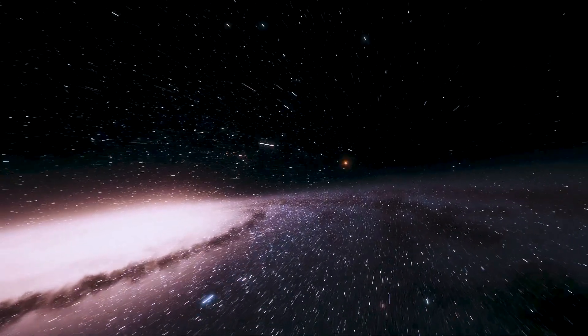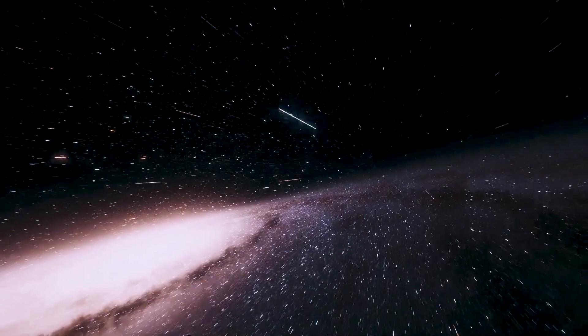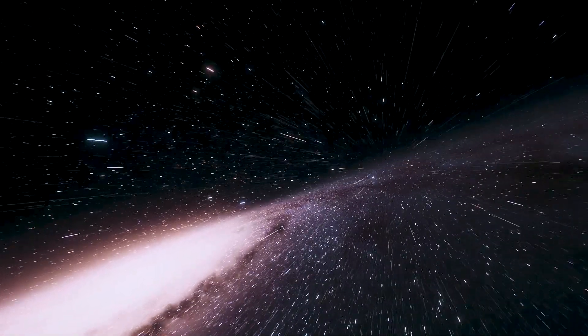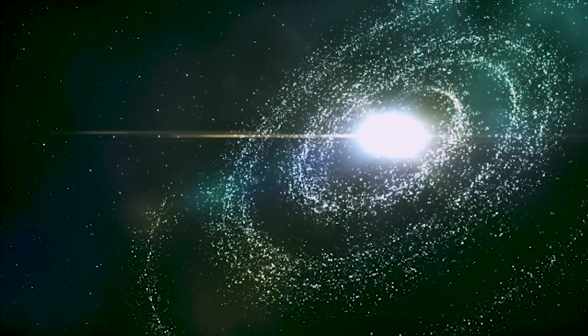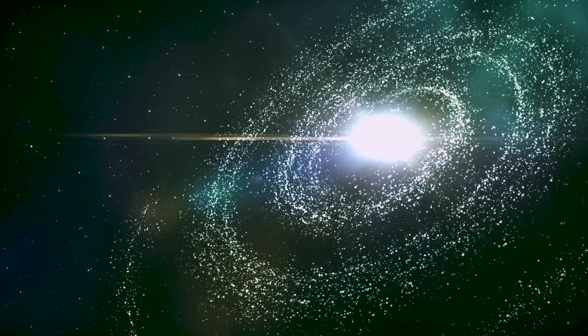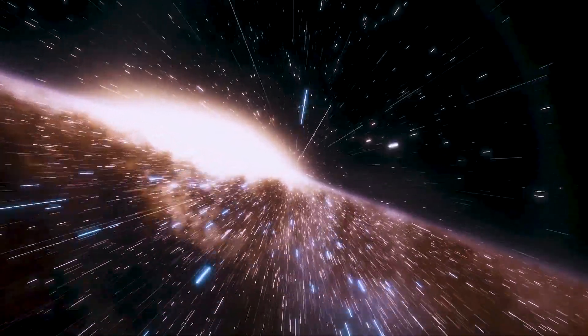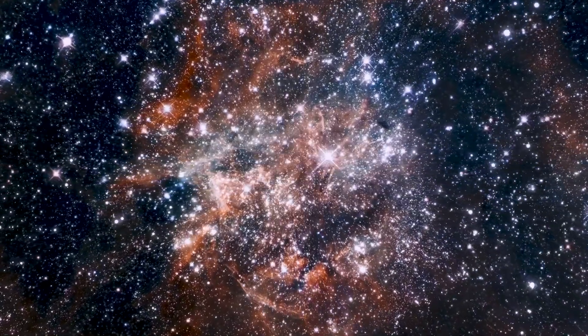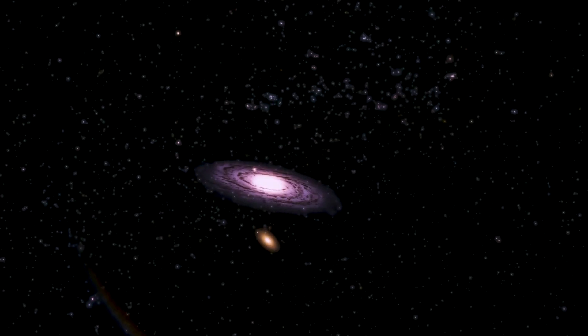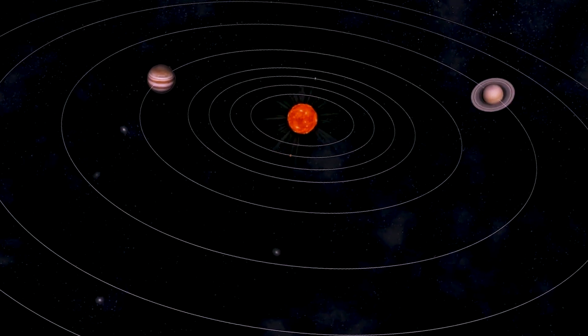The formation of galaxies, stars, and planets is also explained by the Big Bang hypothesis. It implies that the first galaxies were formed when clumps of matter collapsed due to changes in density brought about by the Big Bang. Following cycles of star formation and evolution, these galaxies finally gave rise to our solar system.